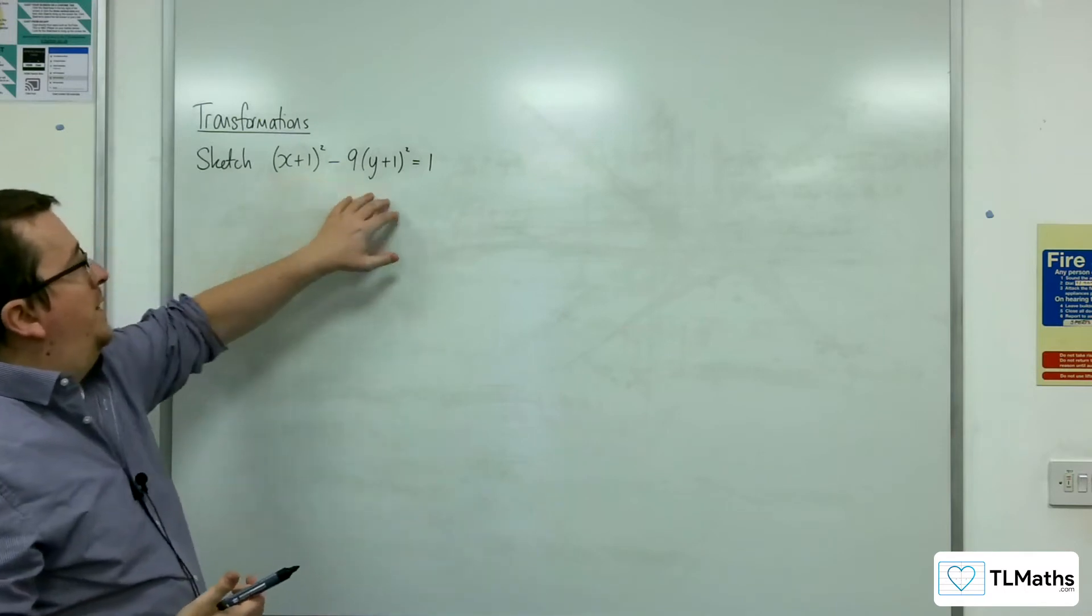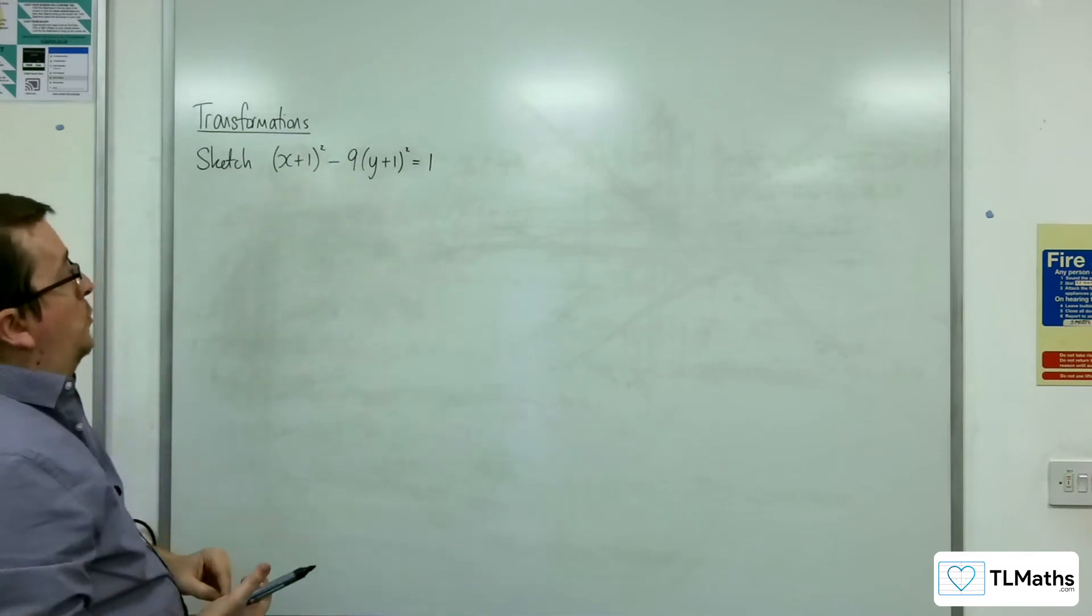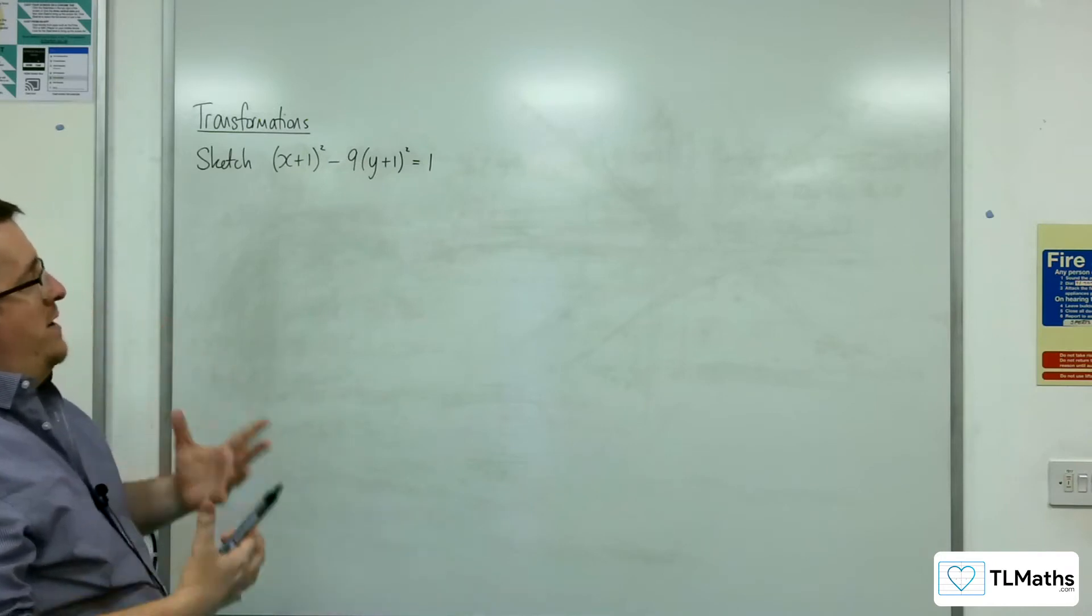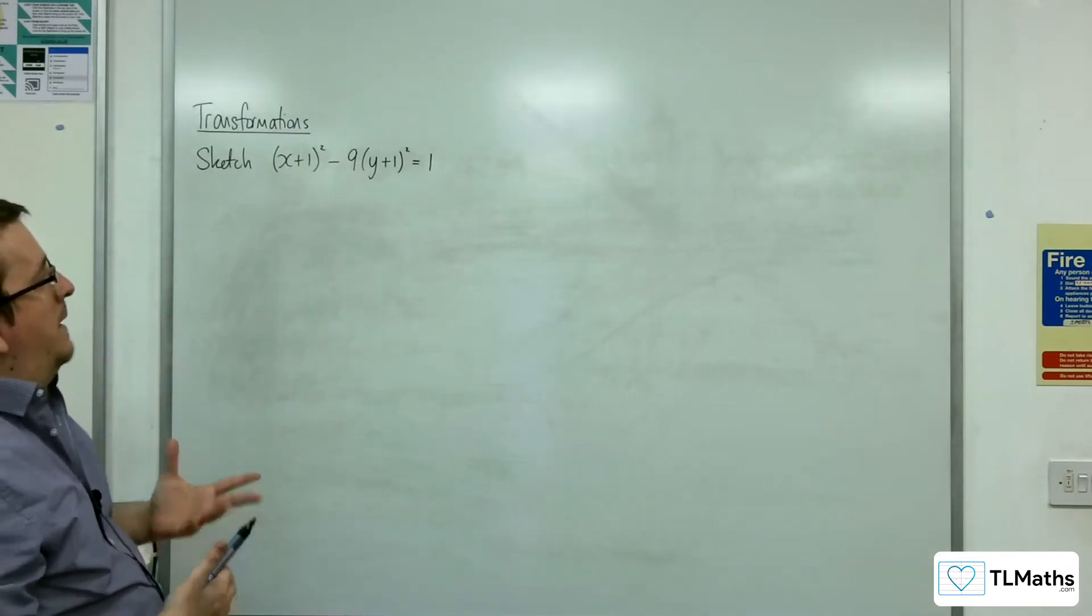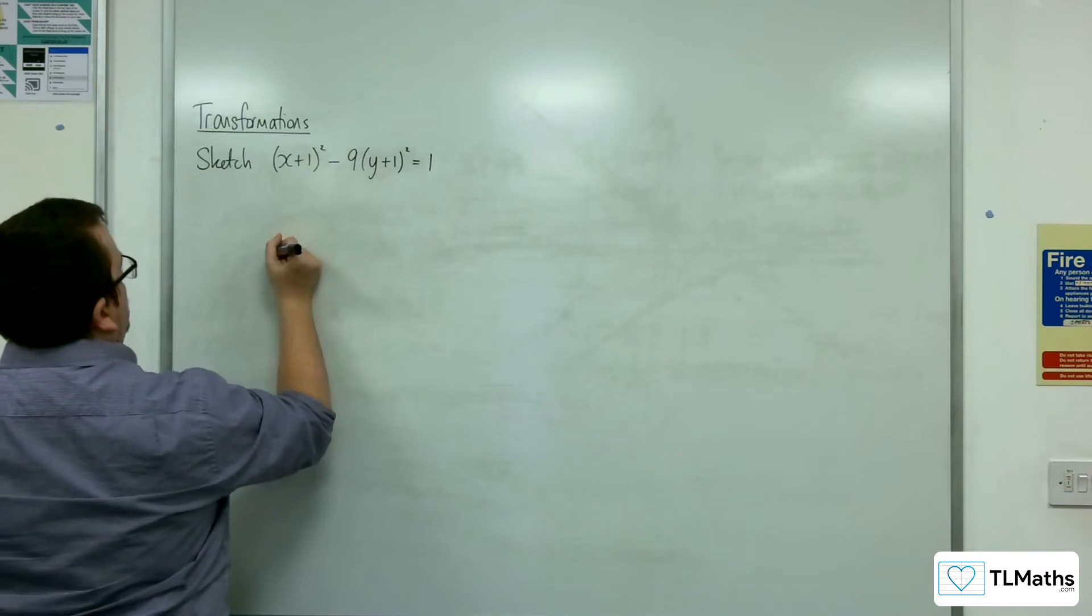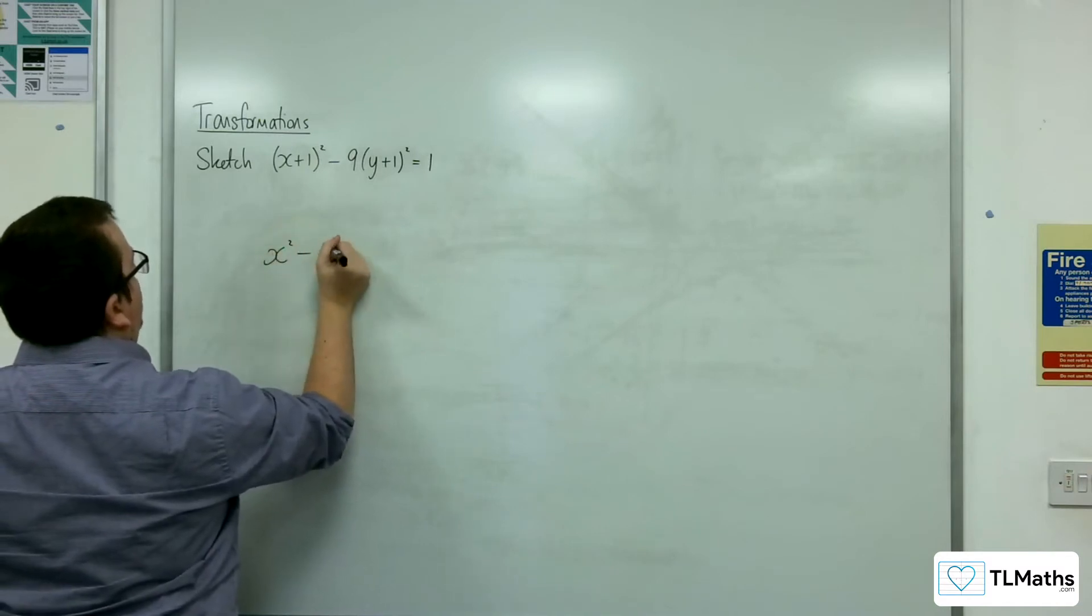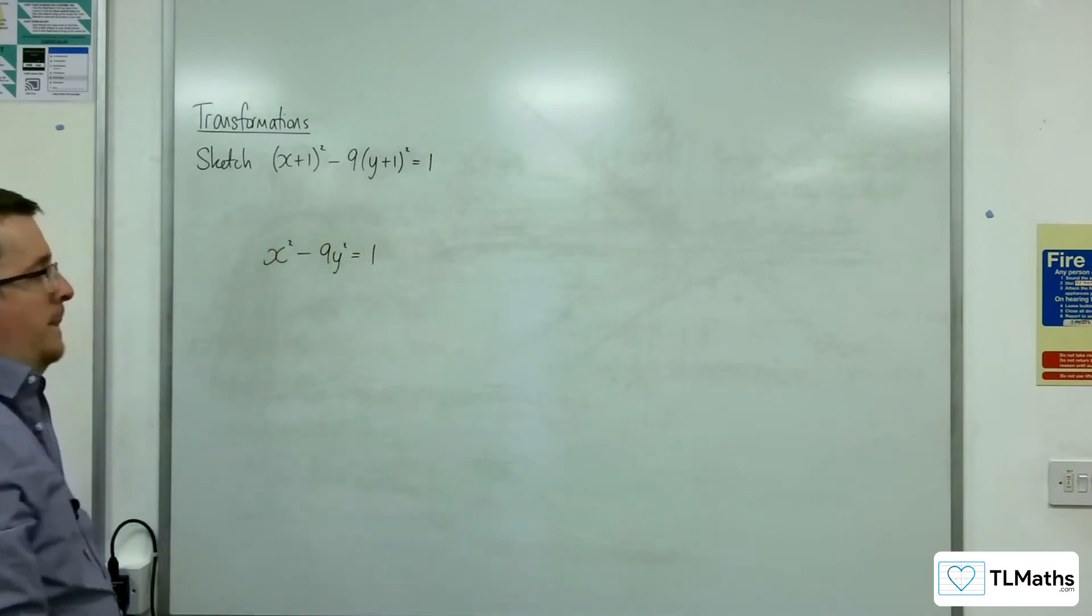because we're going to have x² take away y², so it's of that form. And imagine if the translation hadn't occurred, and we're working with the original graph, x² - 9y² = 1.